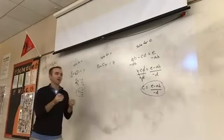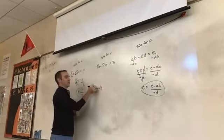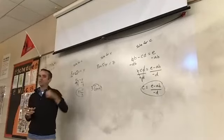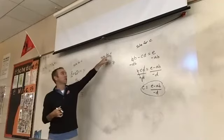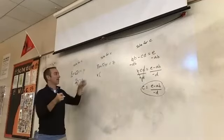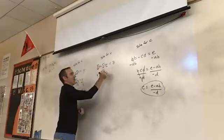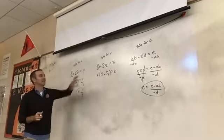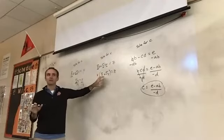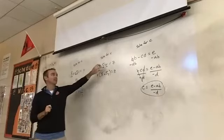Instead, we're going to think of this like distributive property backwards. With distributive property we multiply something in; going backwards, we take something out of both terms. What we take out is what we're solving for — we pull that x out of both terms. Whatever's left goes inside parentheses: 8 from the first term and 5y from the second. We can't combine 8 plus 5y — one has a variable, one doesn't — but now we have one x.